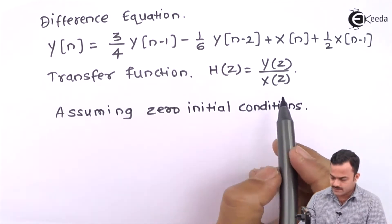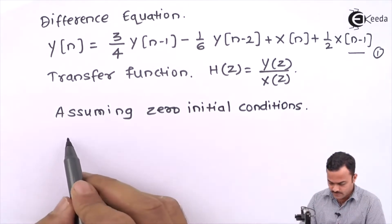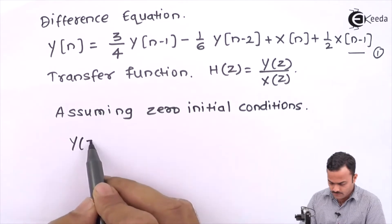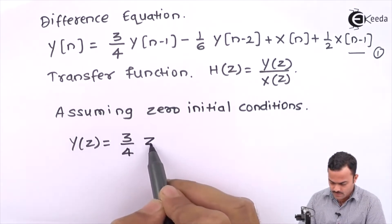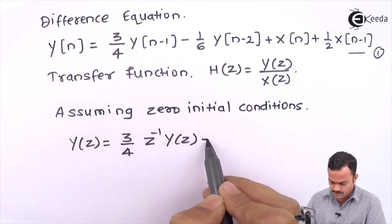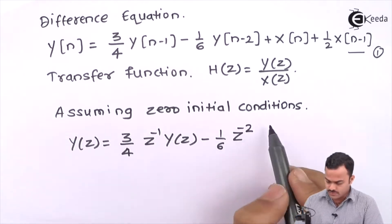We will take a z-transform of this equation number one, which is a difference equation, which will be Y(z) = 3/4 z^(-1) Y(z) - 1/6 z^(-2) Y(z) + X(z) + 1/2 z^(-1) X(z).